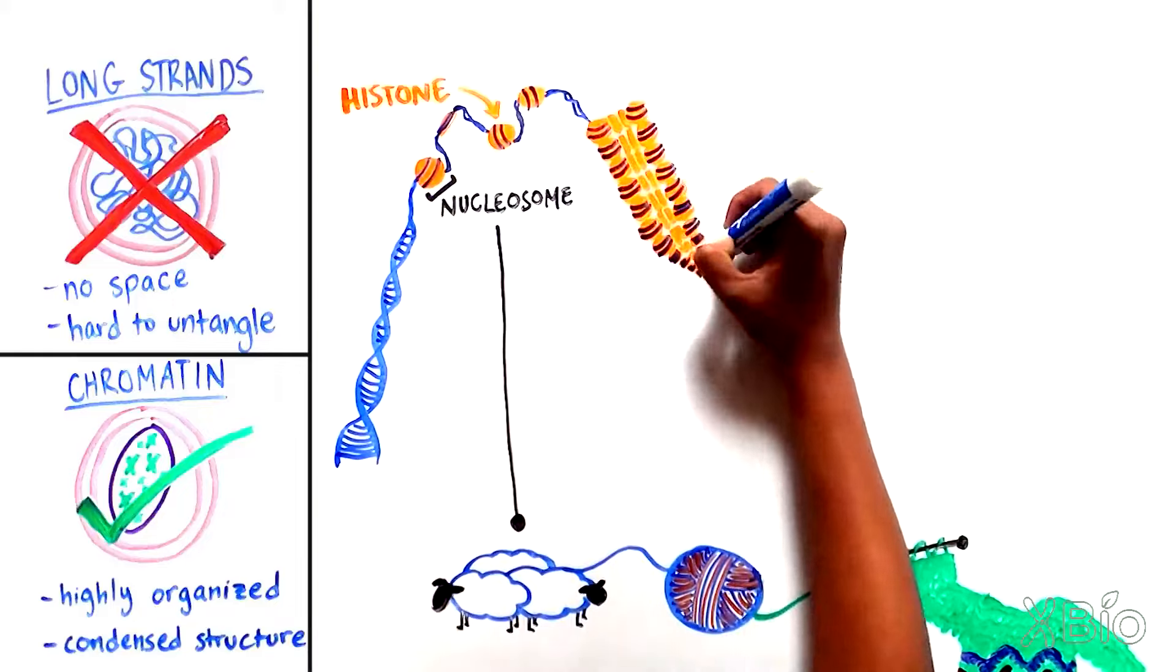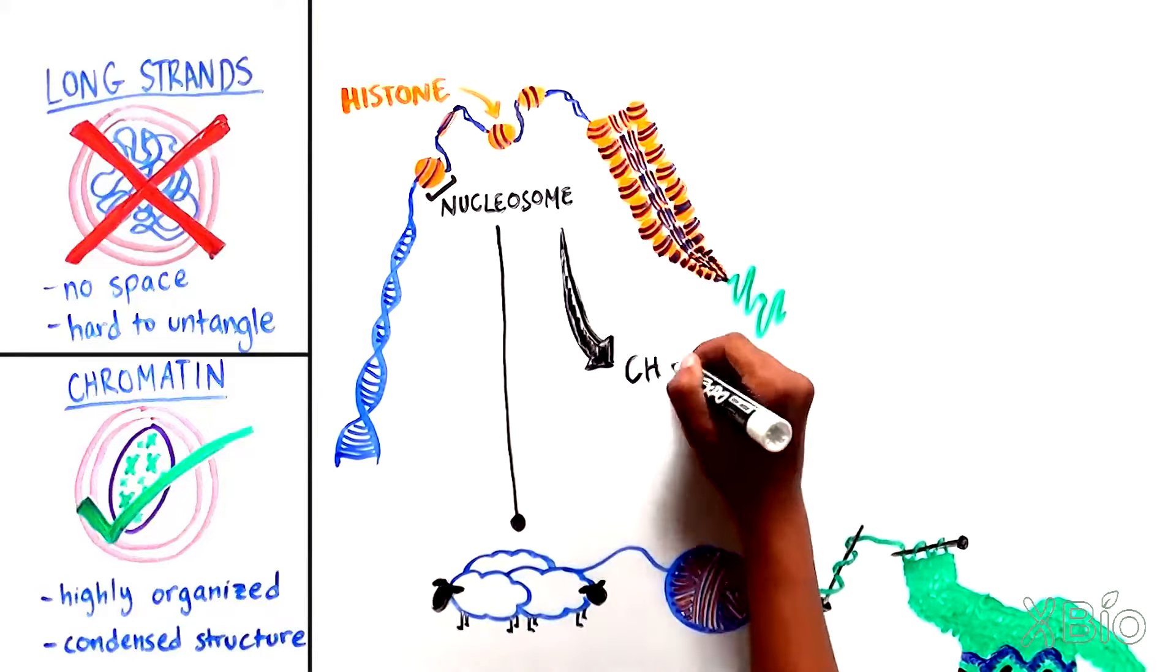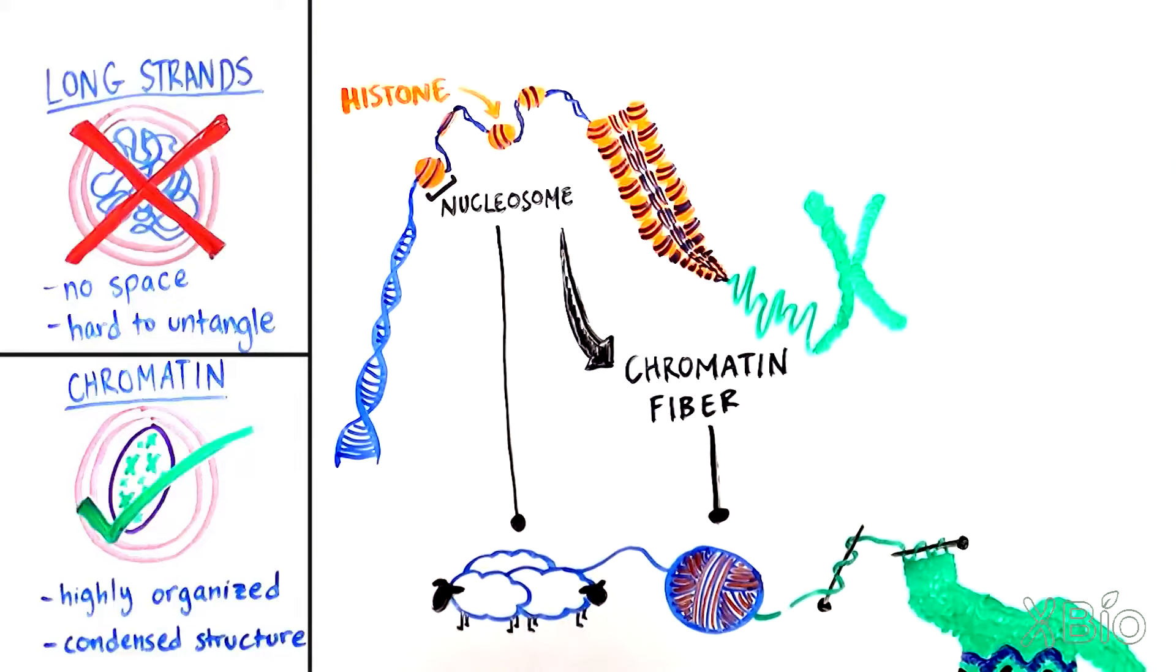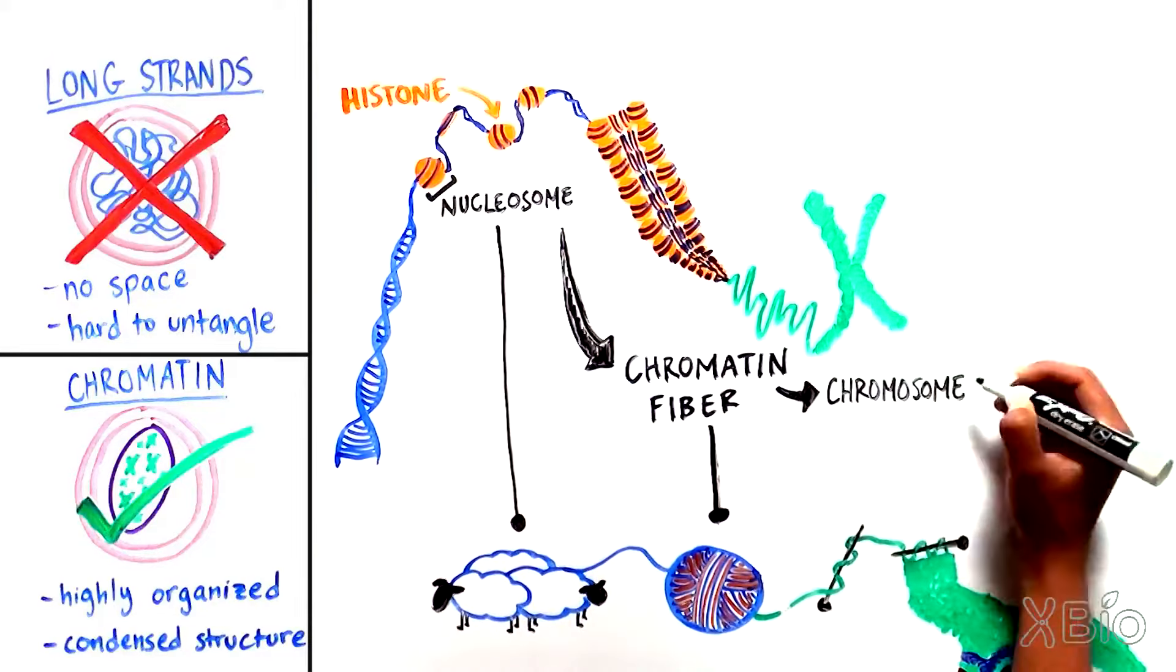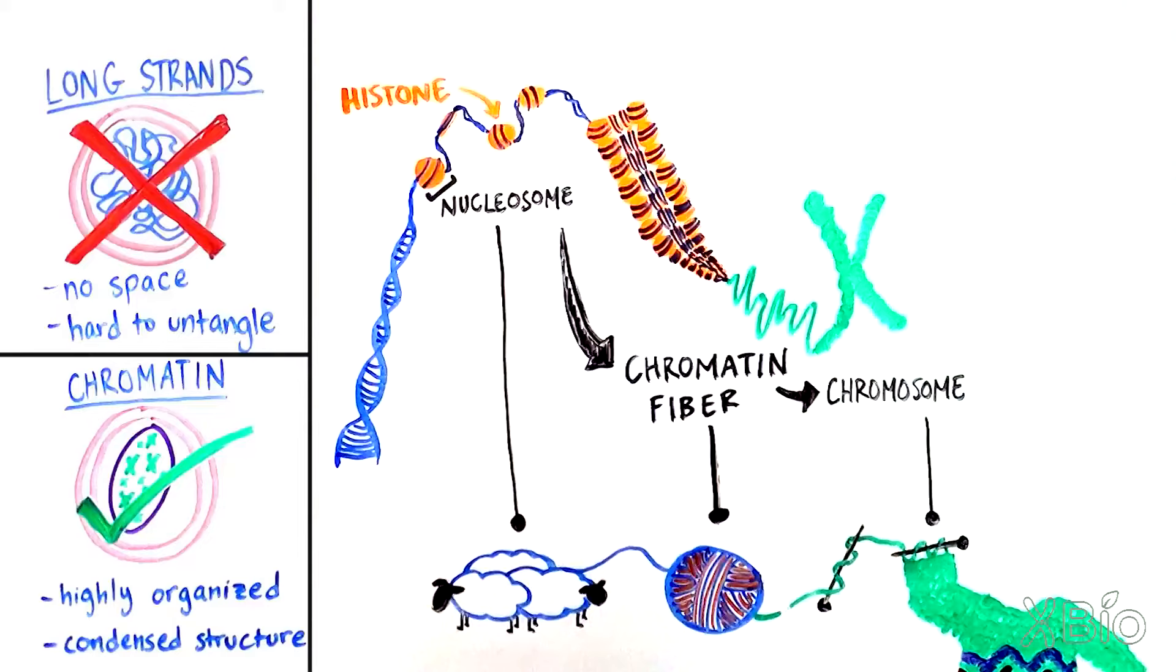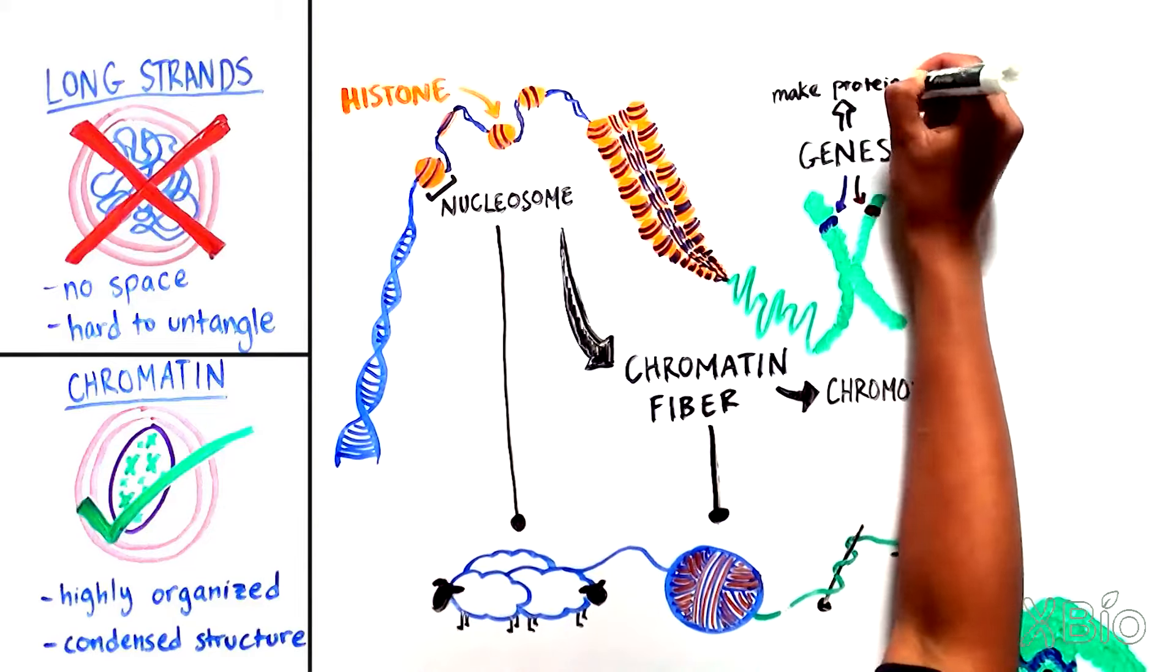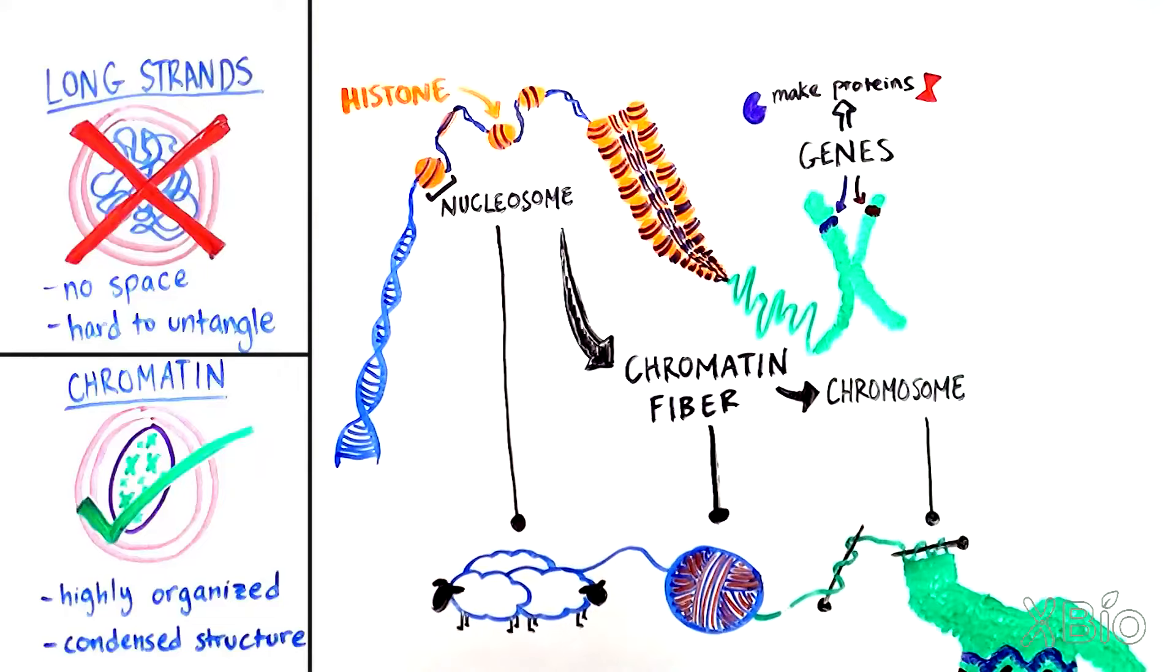Nucleosomes then fold on top of each other into a single chromatin fiber. Nucleosomes are coiled and intertwined into a chromosome, which organizes our genetic information in the form of genes, units of DNA that provide instructions to make proteins.